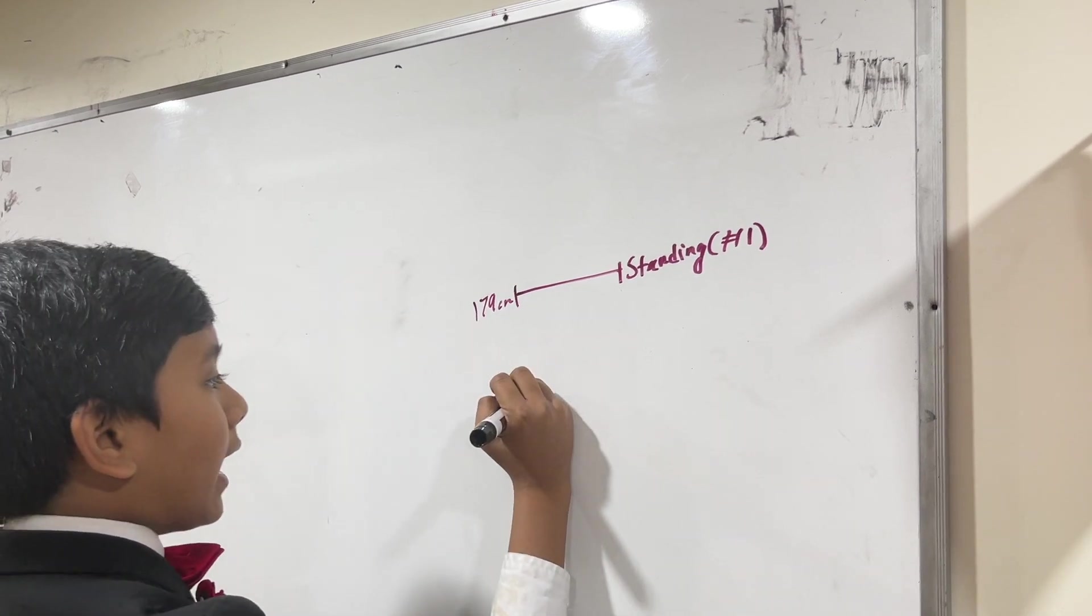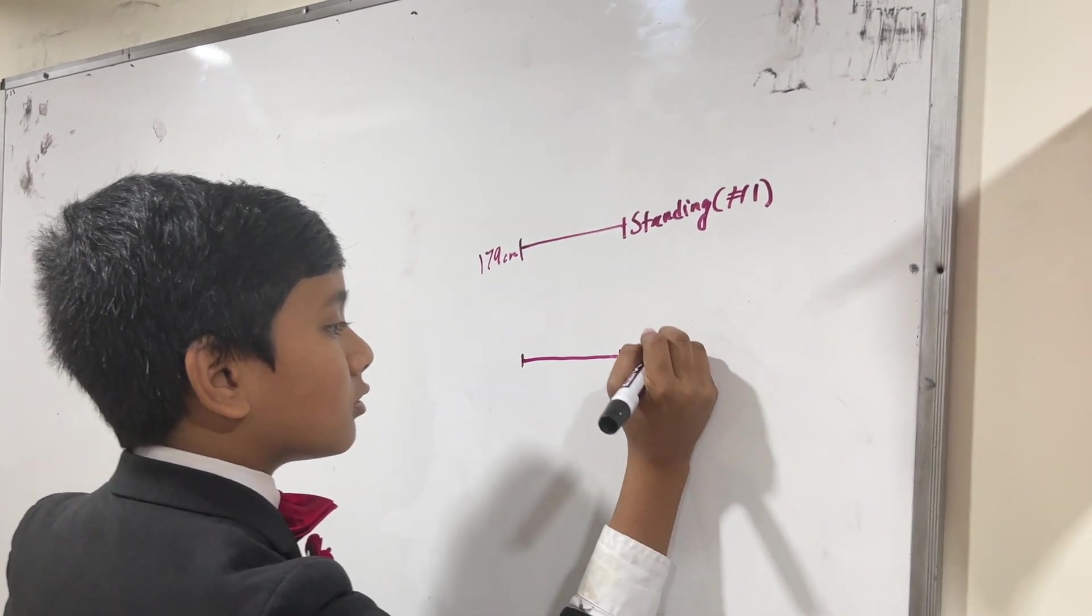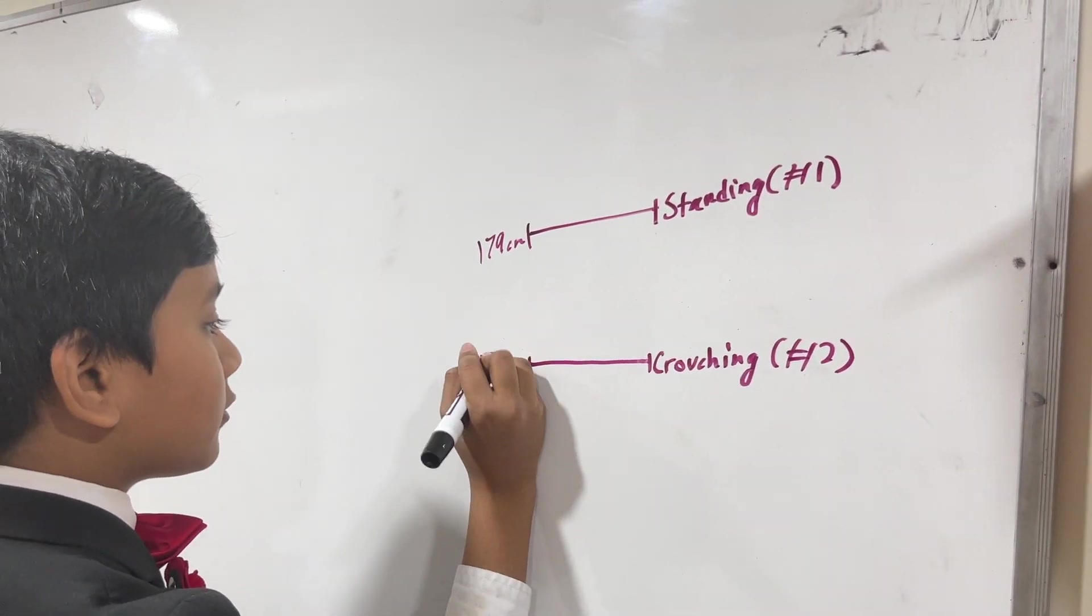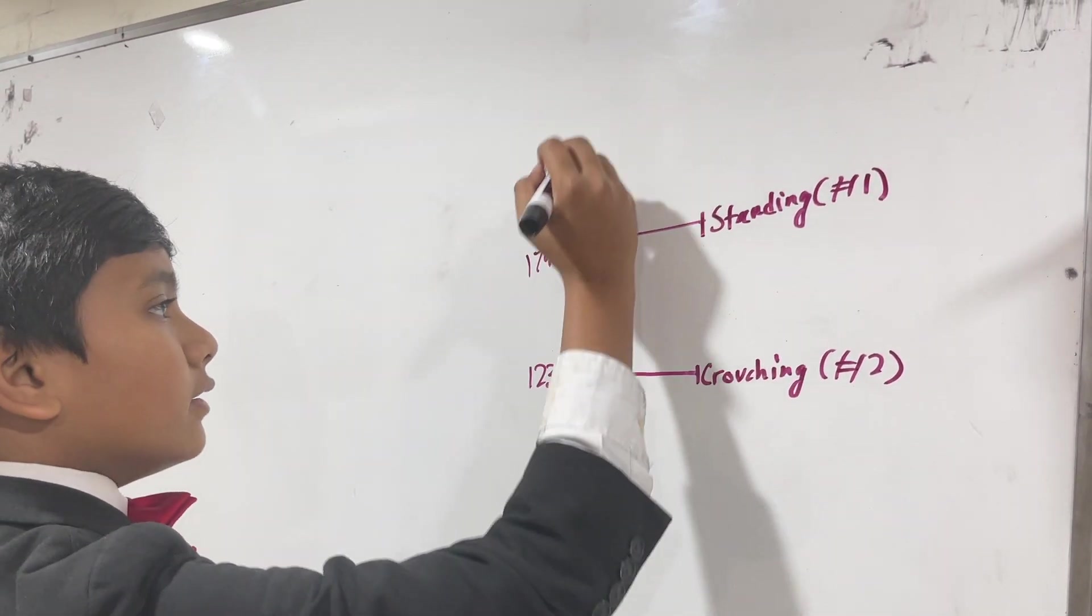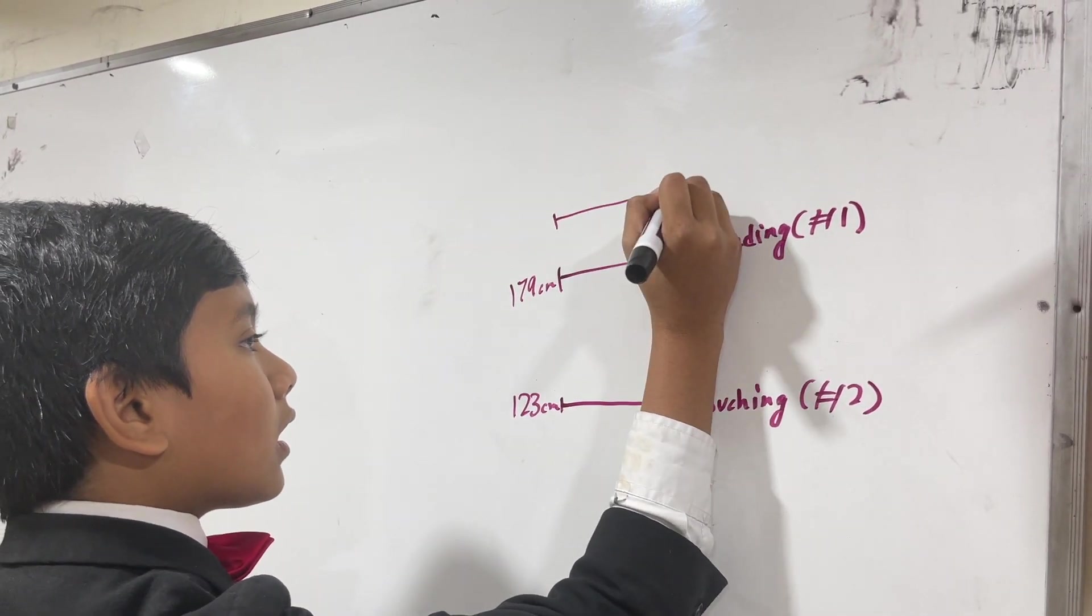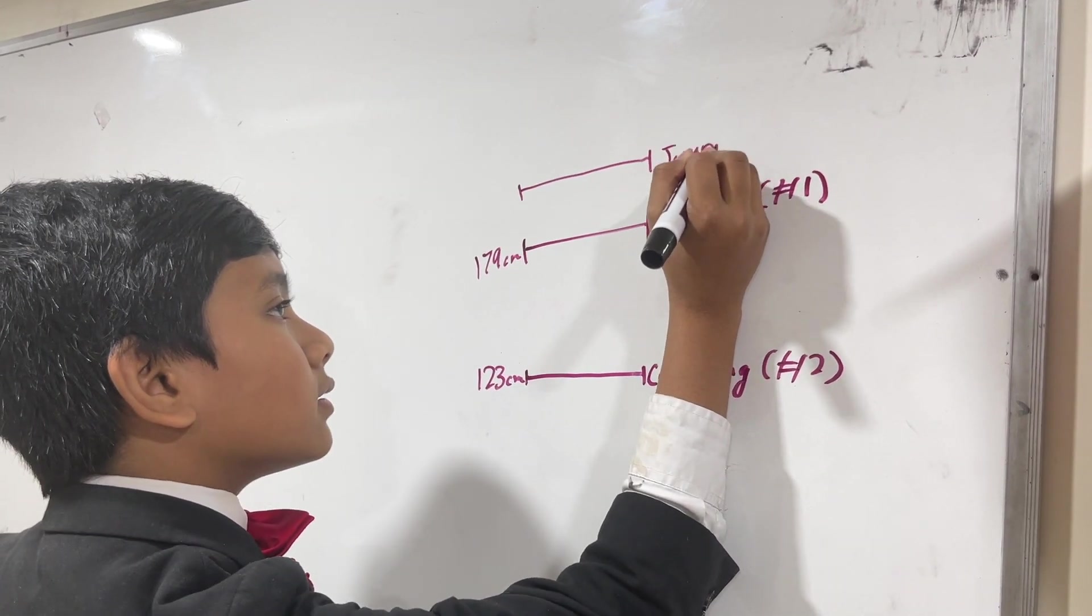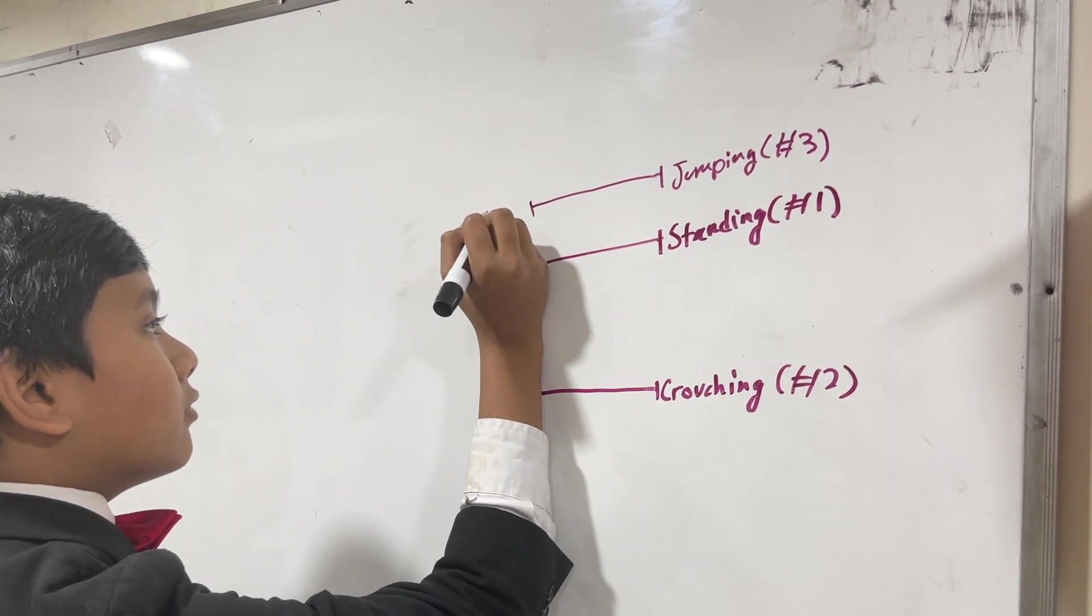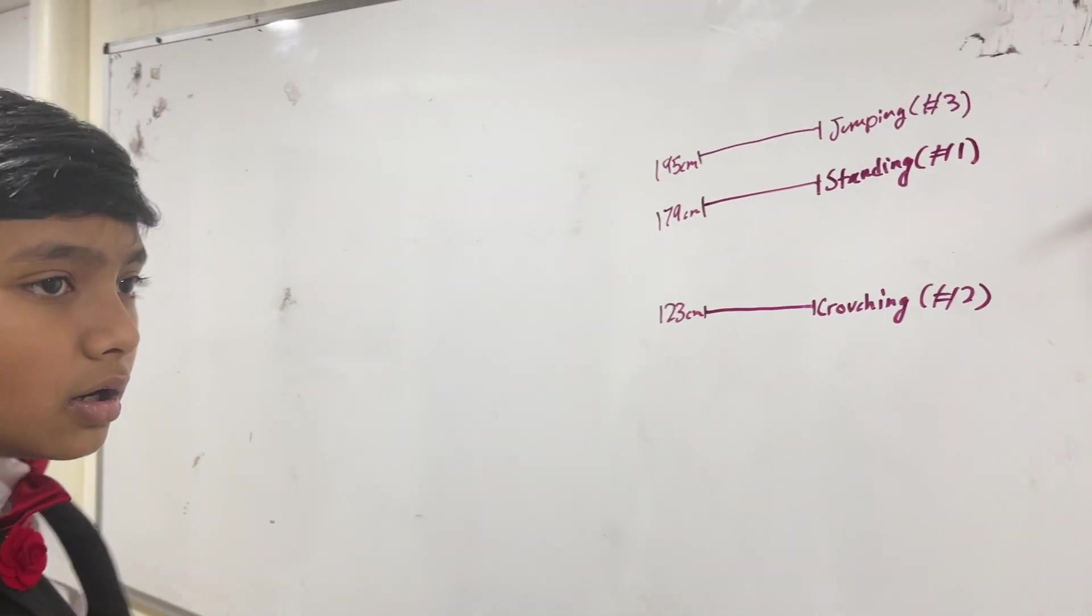Then we had our crouching measurement. This was number two, and it was 123 centimeters off the ground. And finally, we have our jumping measurement, which was measurement number three, and it was 195 centimeters off the ground.